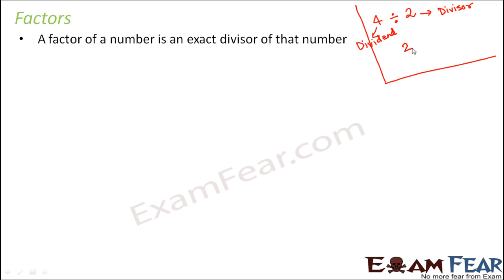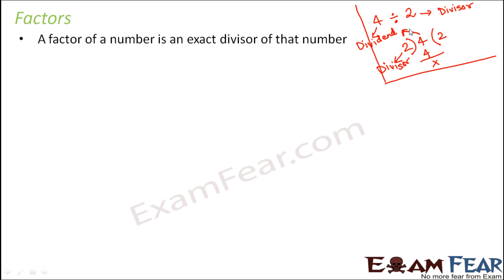So how do you divide? If you divide 4 by 2, you get 2 as the quotient and 0 as the remainder. So these are the four terms we use when we perform a division operation: dividend, divisor, quotient, and remainder.